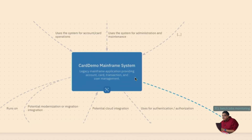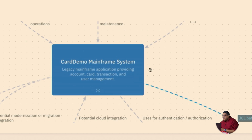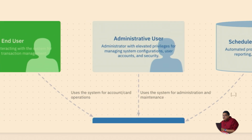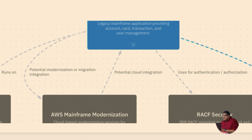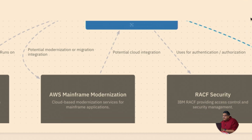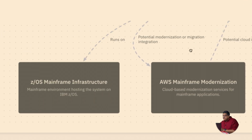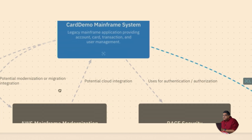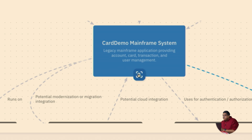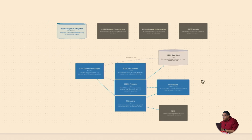As you zoom in, you can start to see we've got the mainframe system. We've actually identified the user types that are typical — you have end users, you have administrative users. We've got batch processes that also interface with the system. And if you come down, you can see the different types of systems that it's connecting to — infrastructure, some SDSF, which is a framework they use. What's cool is now we can start zooming in further.